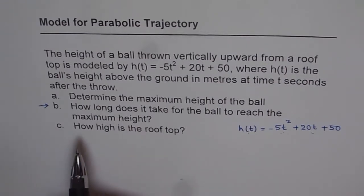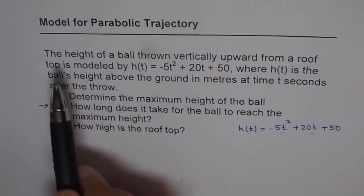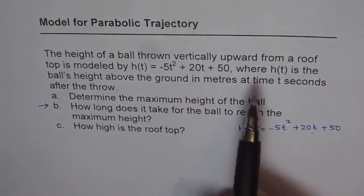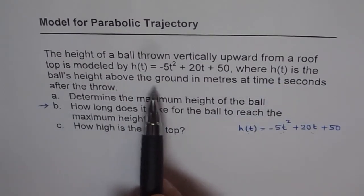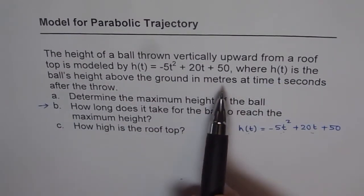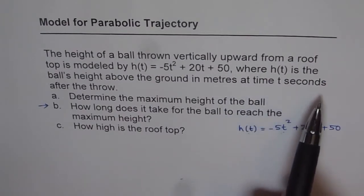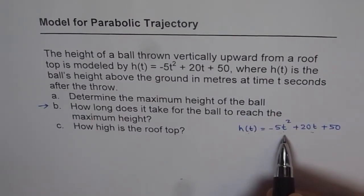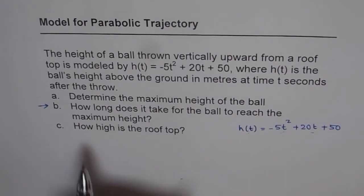How about C? How high is the rooftop? Since the question says the height of the ball thrown vertically upward from the roof is given like this, where h(t) is the ball's height above the ground meters at t equals t seconds after the throw, that means when t equals 0, where is the ball? The ball is on the rooftop. So part C is that simple.